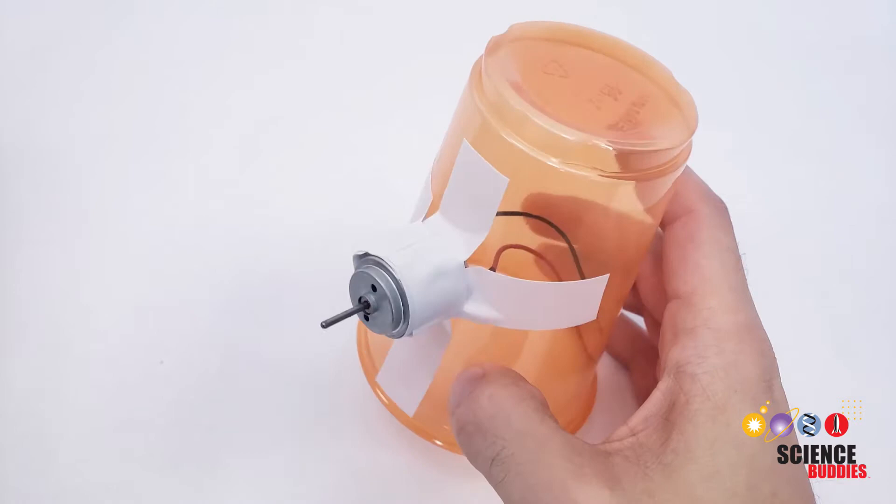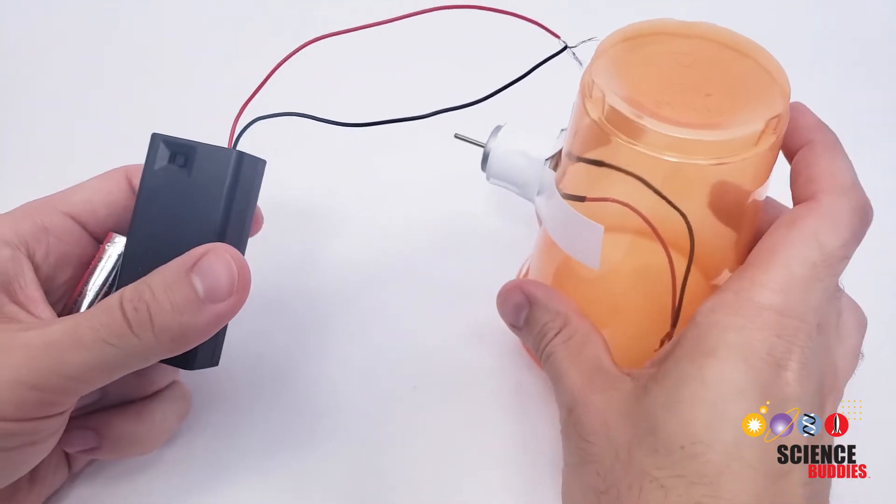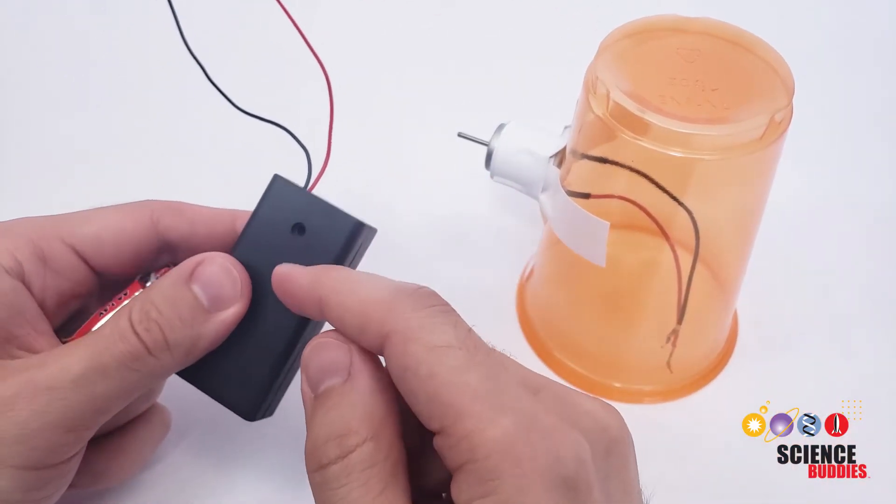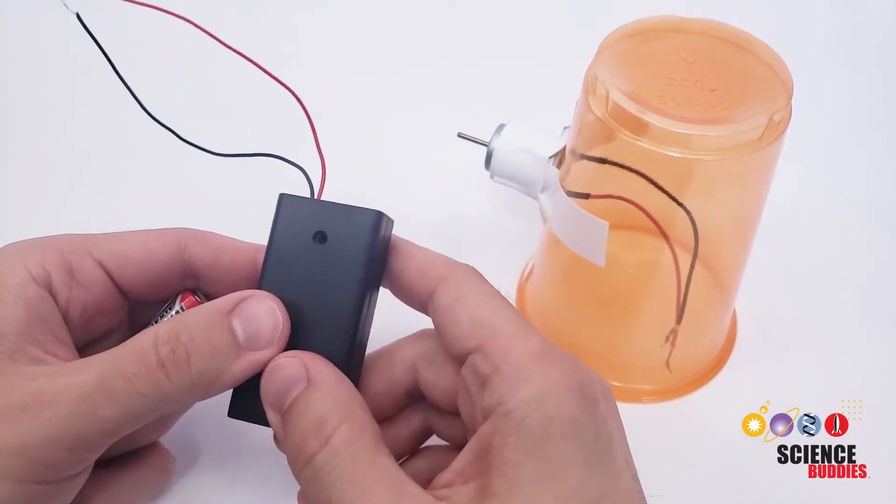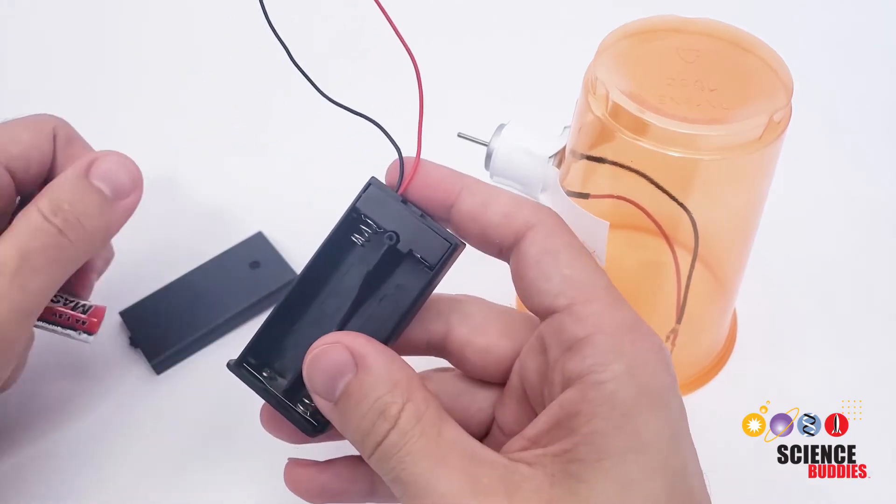Now that we have the motor securely attached with tape, it's time to connect the battery pack to make a circuit so the motor will spin. So your battery pack has a cover on it. There may be a small screw holding the cover on. If the screw is there, you can use a small Phillips head screwdriver to remove it. And then you just press gently to slide the cover off the battery pack.